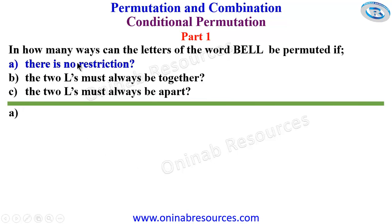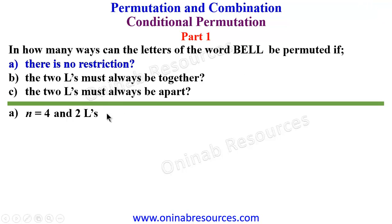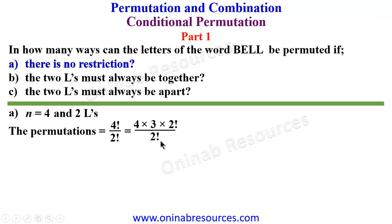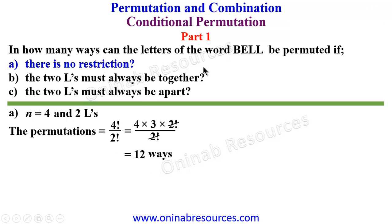We start with part (a): if there's no restriction. This is a case of permutation of indistinguishable objects, so n equals 4, and there are two L's while the other letters appear once each. The permutations will be 4! over 2!, which gives 4 × 3 × 2! over 2!, and the 2! cancels, leaving 4 × 3 = 12 ways of permuting the letters of the word BELL without any restriction.